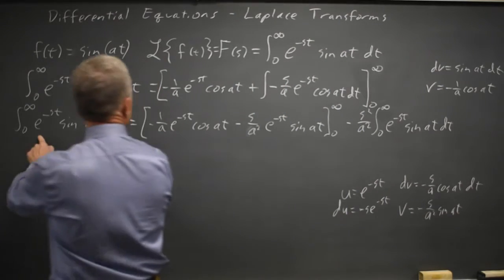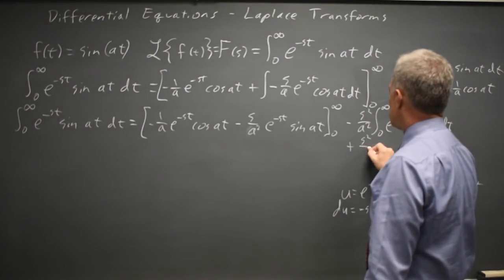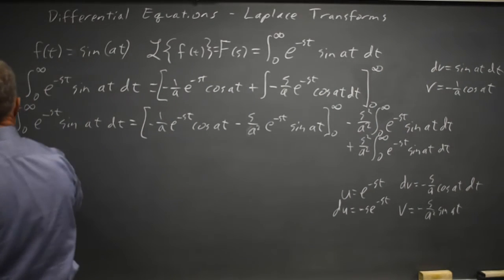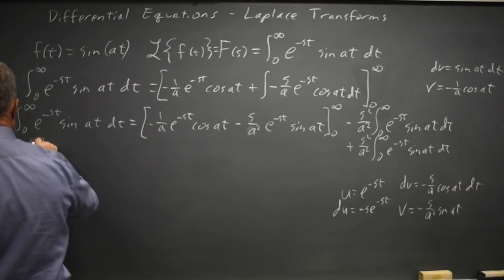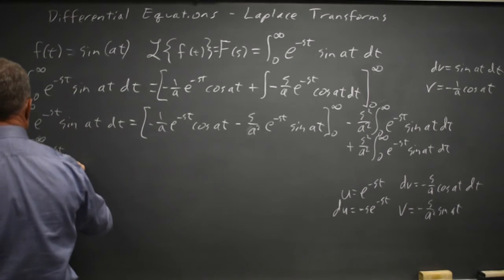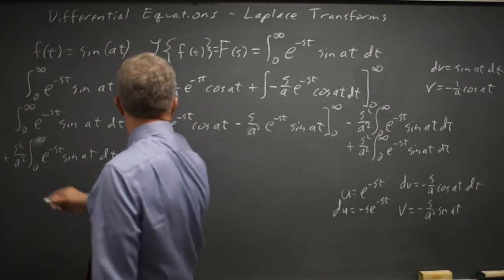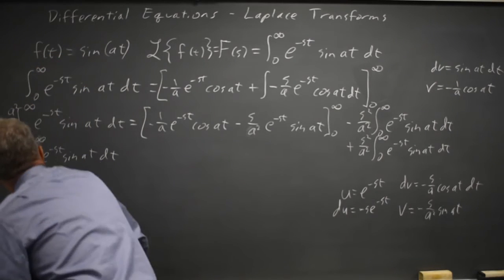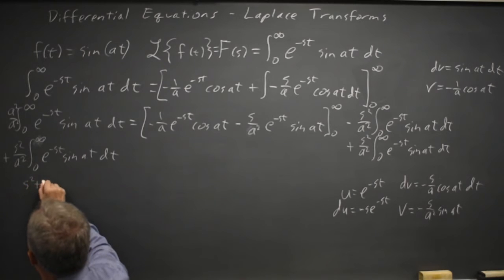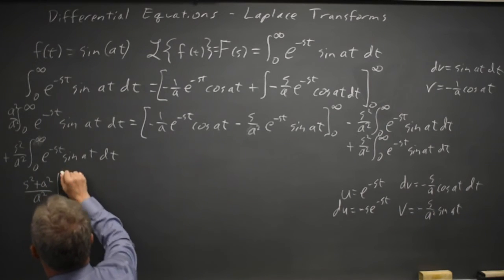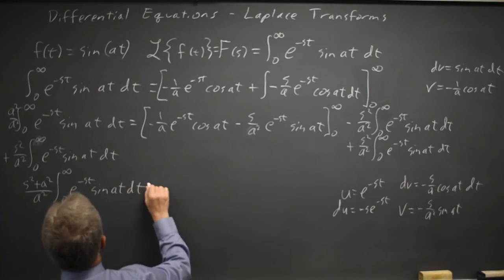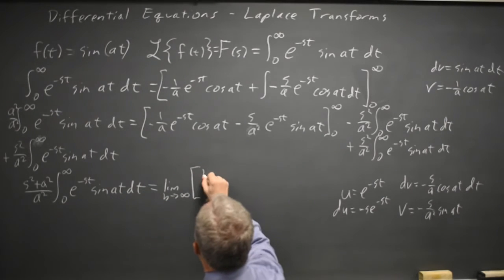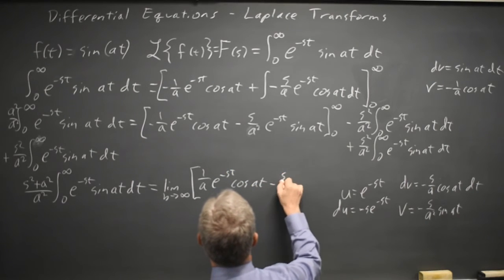But this integral on the right is my original integral. So if I add s squared over a squared times this integral to both sides, I have one plus s squared over a squared times that integral. Changing the coefficient to a squared over a squared for a common denominator gives me s squared plus a squared over a squared times my original integral, equals the limit as b goes to infinity of: negative 1 over a, e to the negative st cosine at, minus s over a squared, plus s squared over a squared, e to the negative st sine at, from zero to b.